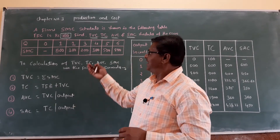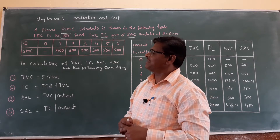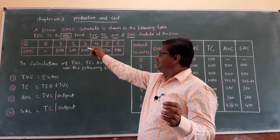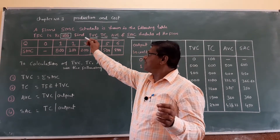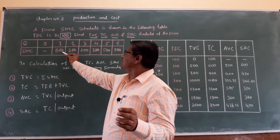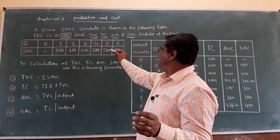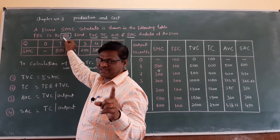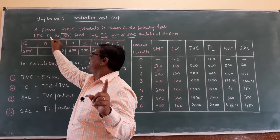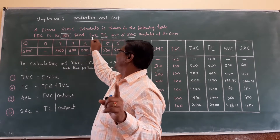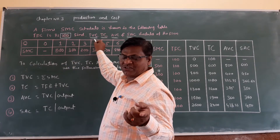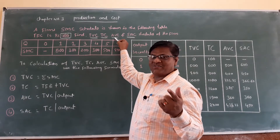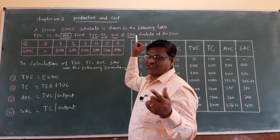The question is: a firm's SMC (short run marginal cost) schedule is shown in the following table. TFC is Rs. 100 — total fixed cost is Rs. 100. Find TVC (total variable cost), TC (total cost), AVC (average variable cost), and SAC (short run average cost) schedule of the firm.